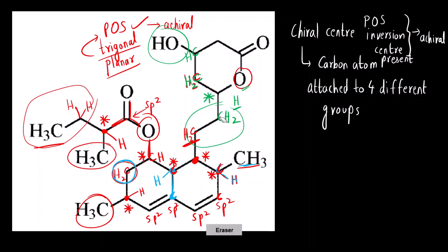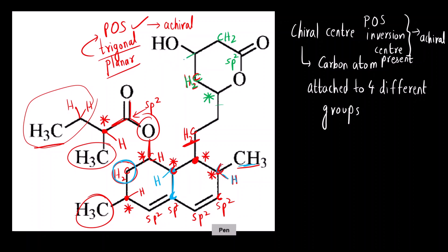This carbon is sp2 hybridized — achiral. This one has two hydrogens — also achiral. Now let's check this one: one group is H, one is OH, the third is CH₂ going one way, and the fourth is CH₂ going the other. Since those two CH₂ paths initially look the same, check the next carbon: one side has a carbonyl group and the other has CH — so they are different. Therefore this is also a chiral center.